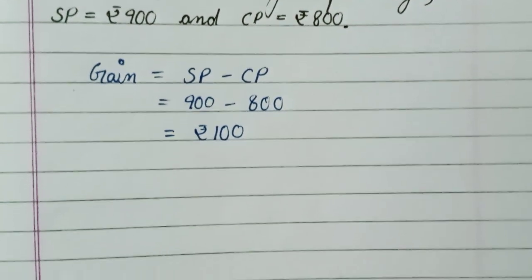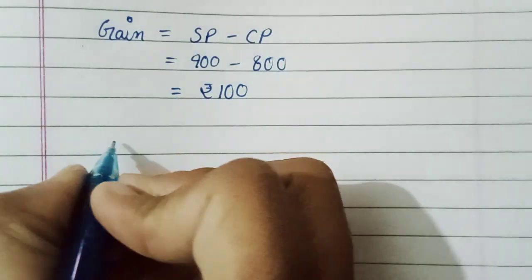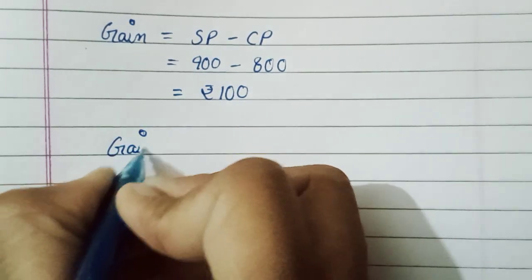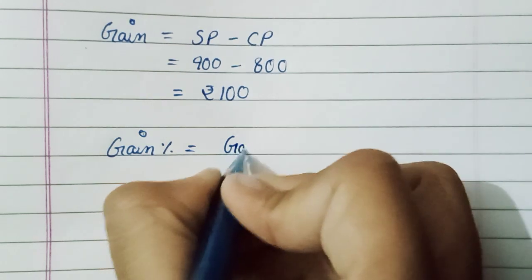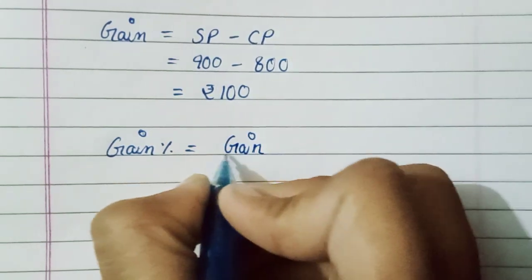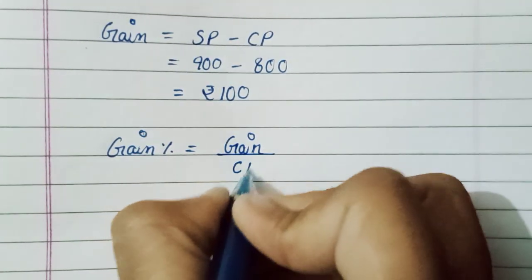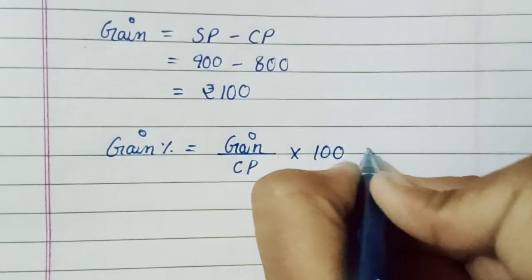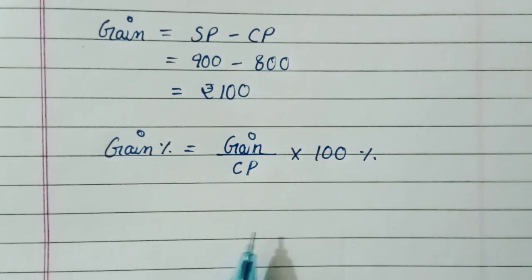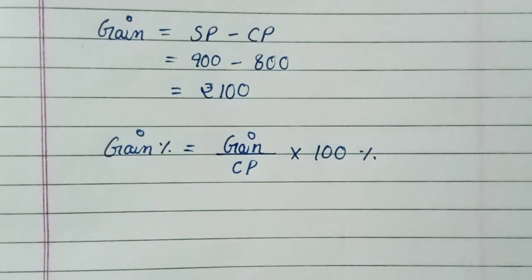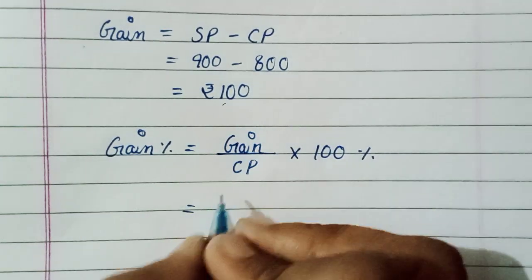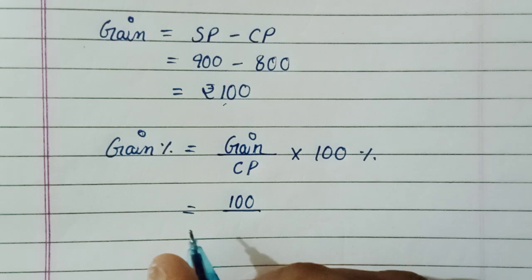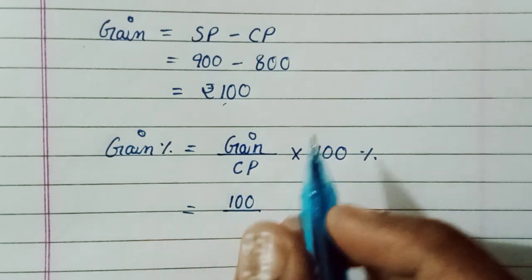As we know, the formula of gain percent is equals to gain upon CP into hundred percent. This is the formula of gain percent. Now put the values according to the formula: gain which is 100, 100 upon CP which is 800, into hundred percent.